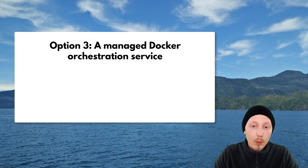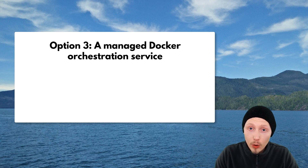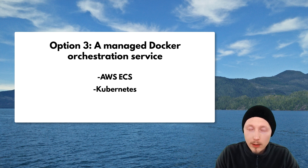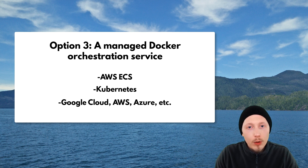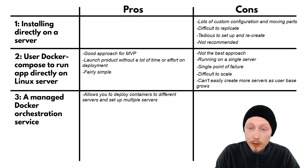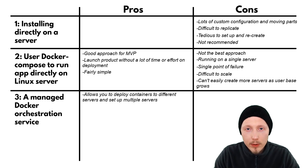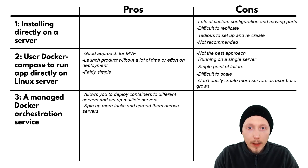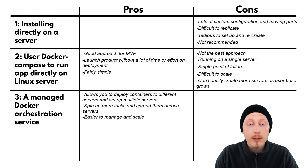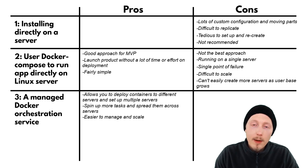Option three is to create a deployment using a managed Docker orchestration service. This could include AWS ECS or cloud platforms such as Google Cloud, AWS, and Azure. The benefit is that it allows you to run your containers in a service that orchestrates deploying those containers to different servers. You can set up multiple servers and use the tool to spin up more tasks of your service and spread them across servers, making it easier to manage your application and handle scaling.